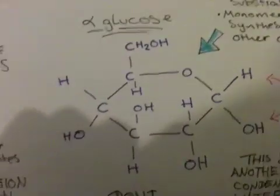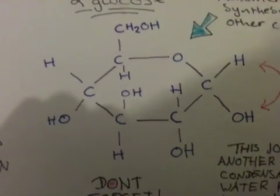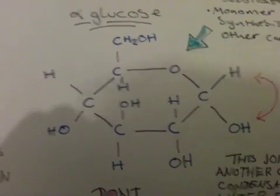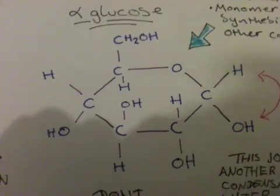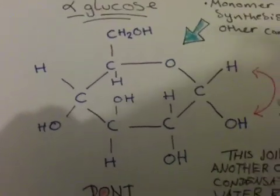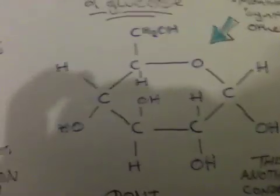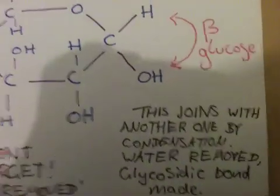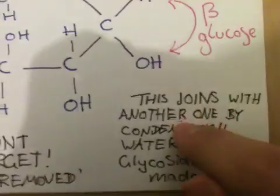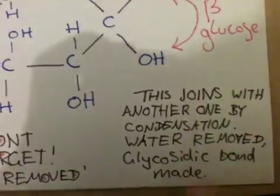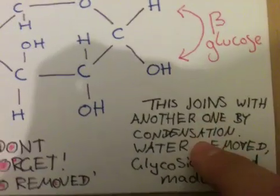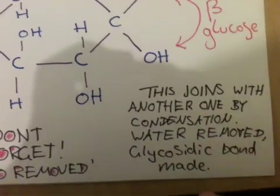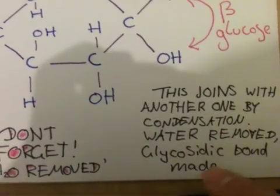These glucoses, which are currently monosaccharides because they're on their own, can join to make a disaccharide and polysaccharides. Disaccharides, as you've probably guessed, are just two of these joined together. When they are joined, they have to be joined using a condensation reaction.